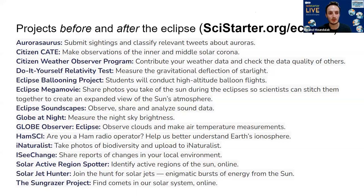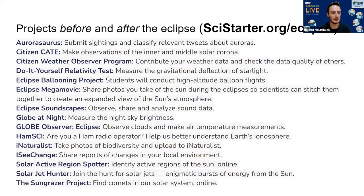We also have the Citizen Weather Observer Program and a Do It Yourself Relativity Test. We're always adding new projects — some recently added include the Eclipse Ballooning Project for students to conduct high-altitude balloon flights. Many of these projects were conducted during the 2017 eclipse and are being planned again. The Eclipse Mega Movie project has everyone share photos or videos of the sun during the eclipse to create one combined video — it's really interesting to see how combining photos from several locations and devices comes together.